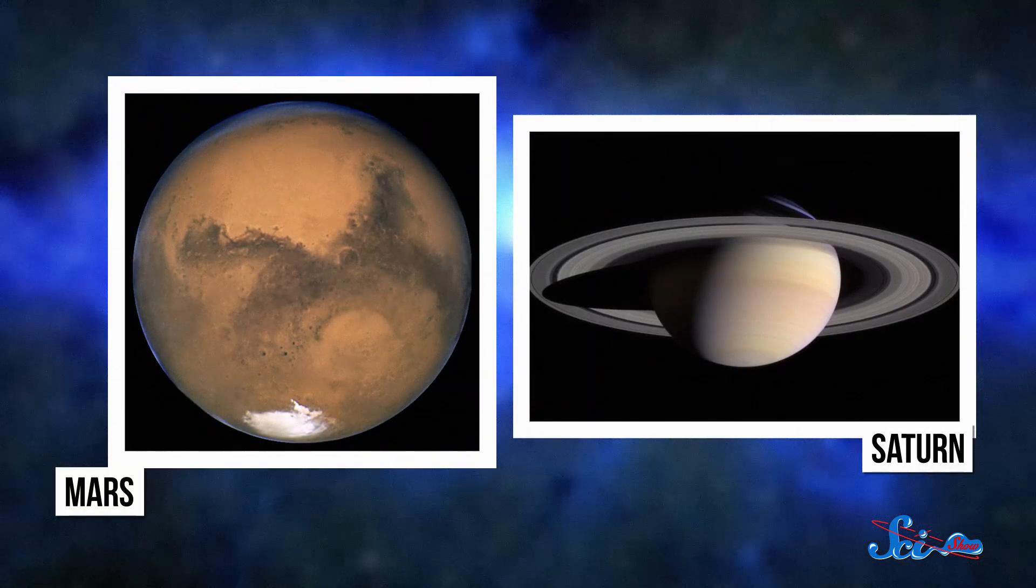Mars is pretty cool already. I mean, it's got liquid water and everything. But wouldn't it be cooler if Mars had rings, like Saturn?